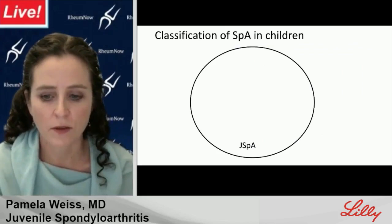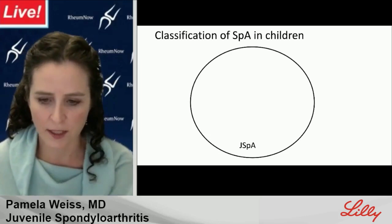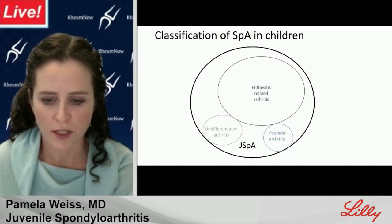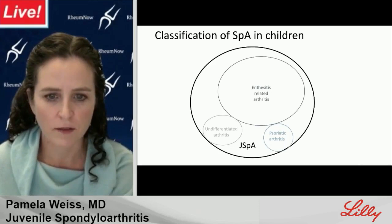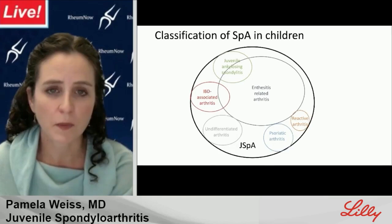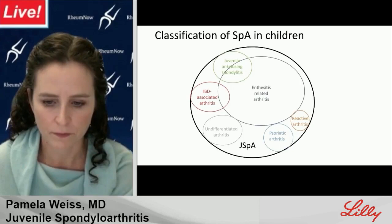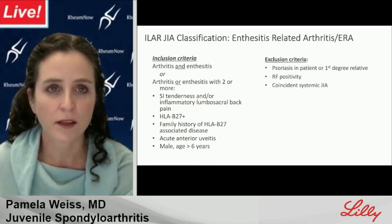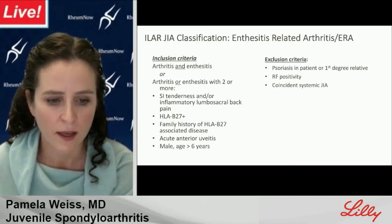As with spinal arthritis in adults, the term spinal arthritis in pediatrics is an umbrella term for several heterogeneous conditions. The categories most associated with J-SPA include enthesitis-related arthritis, juvenile ankylosing spondylitis, IBD-associated spondylitis, and reactive arthritis. I will refer to juvenile SPA and ERA or enthesitis-related arthritis interchangeably throughout the lecture — the groups are similar but not exactly the same. ERA accounts for the vast majority of cases of what would traditionally be considered spondyloarthritis.